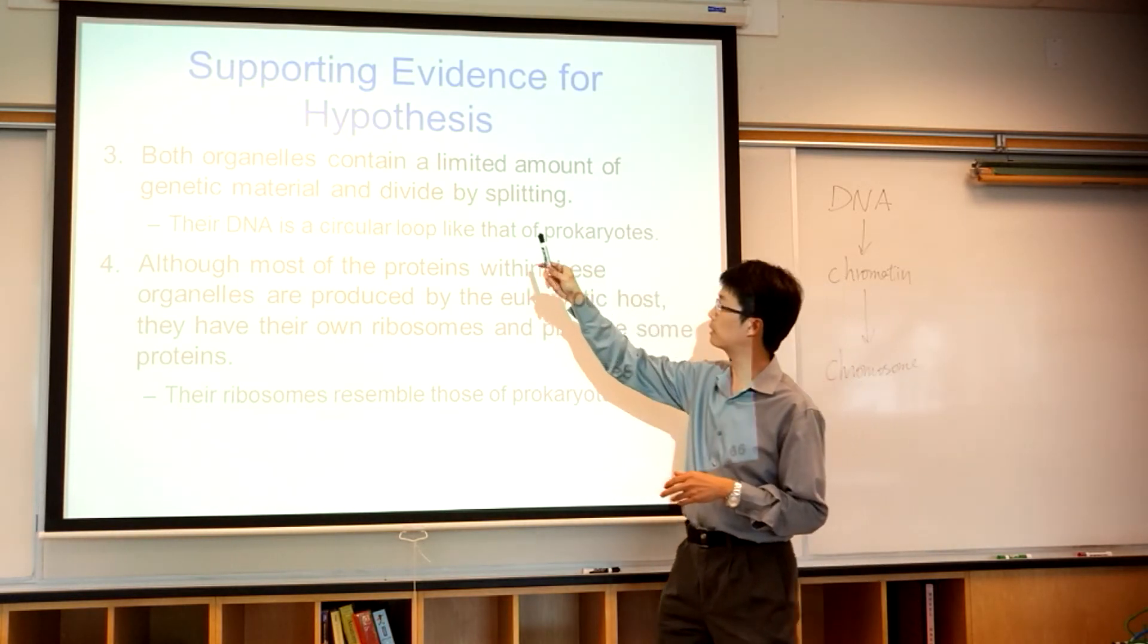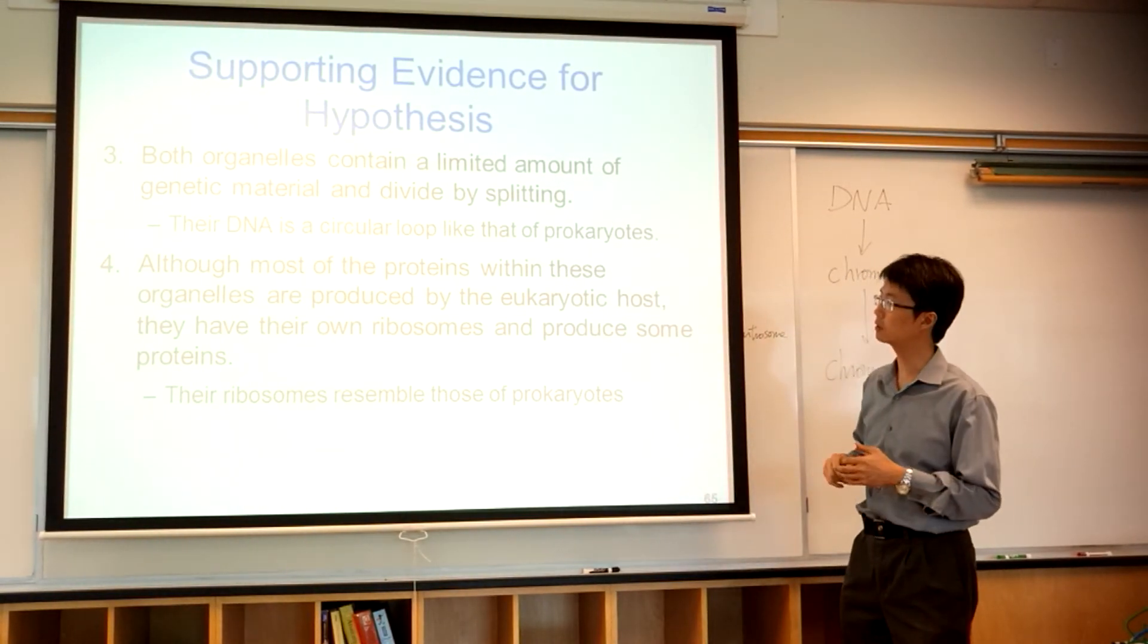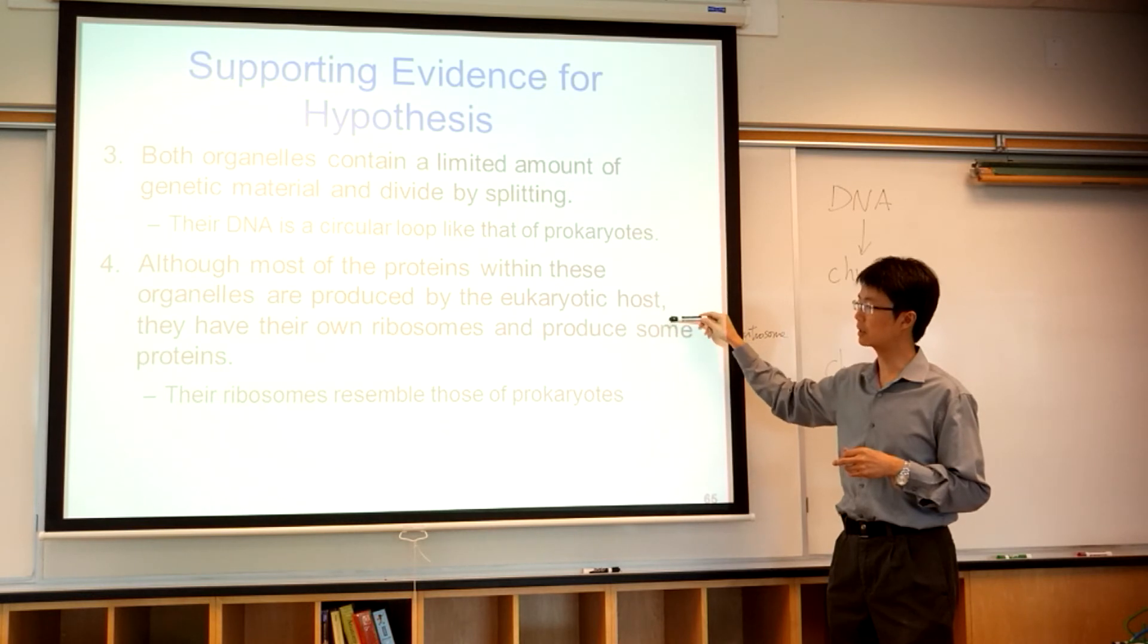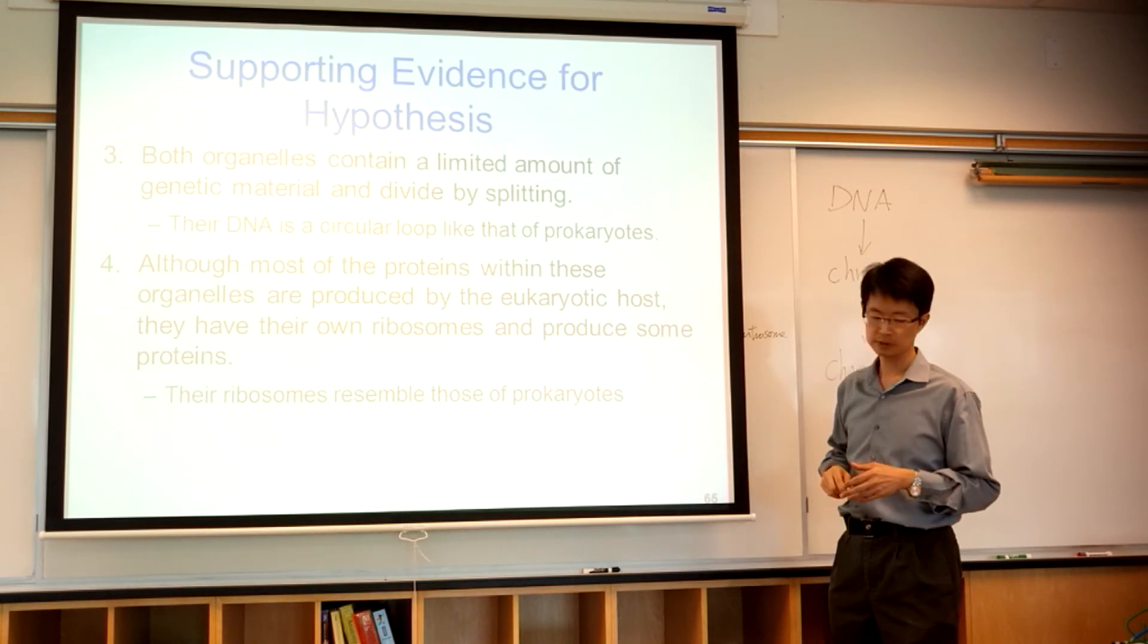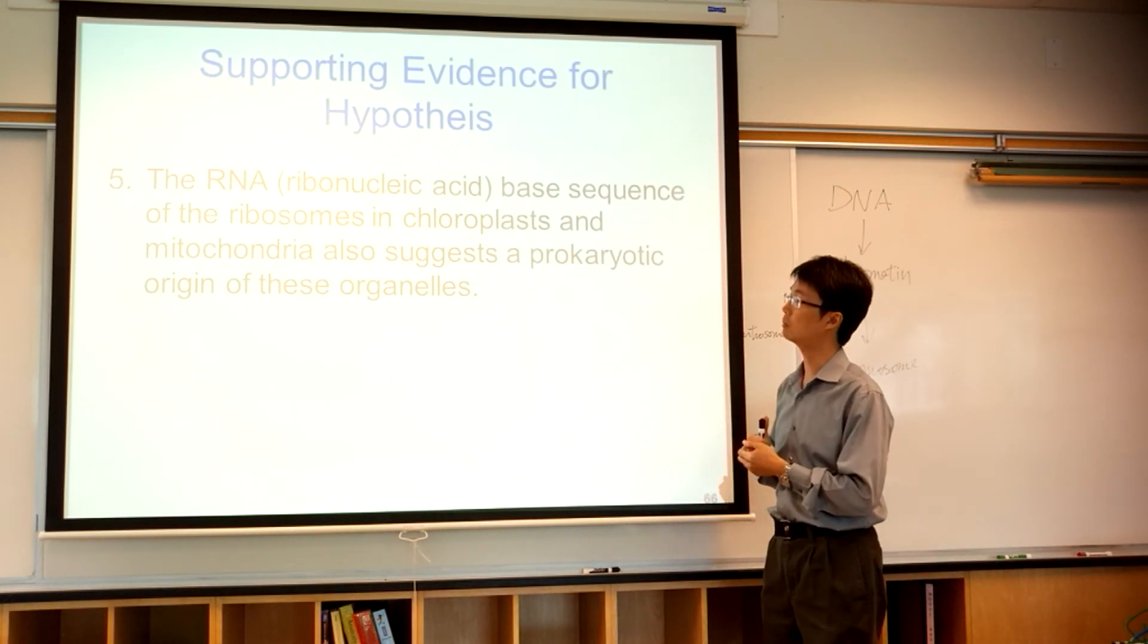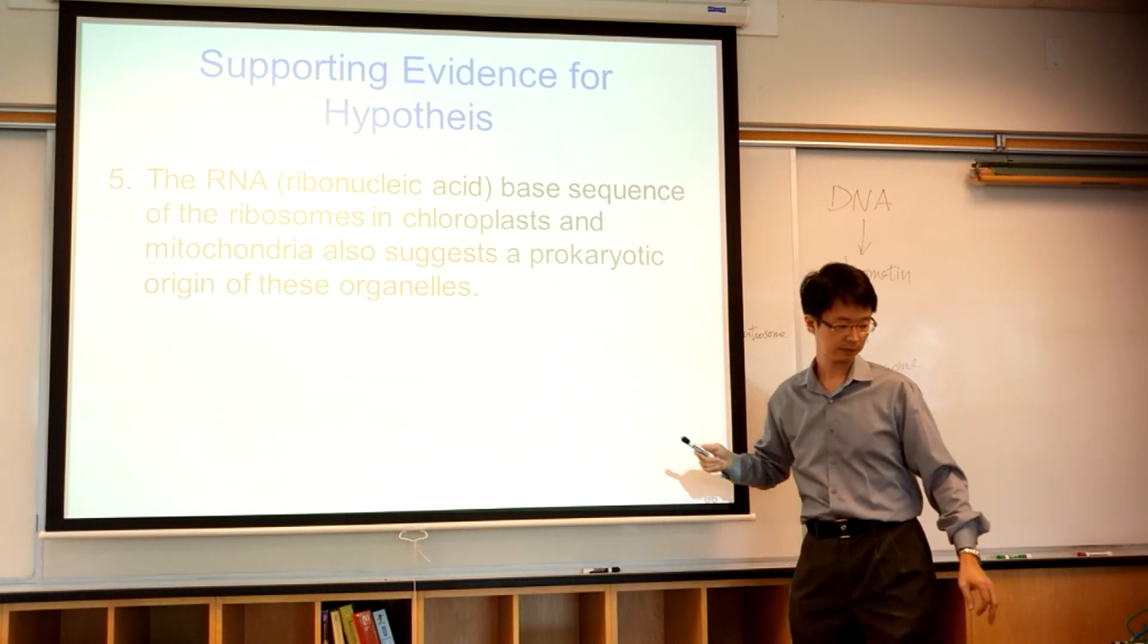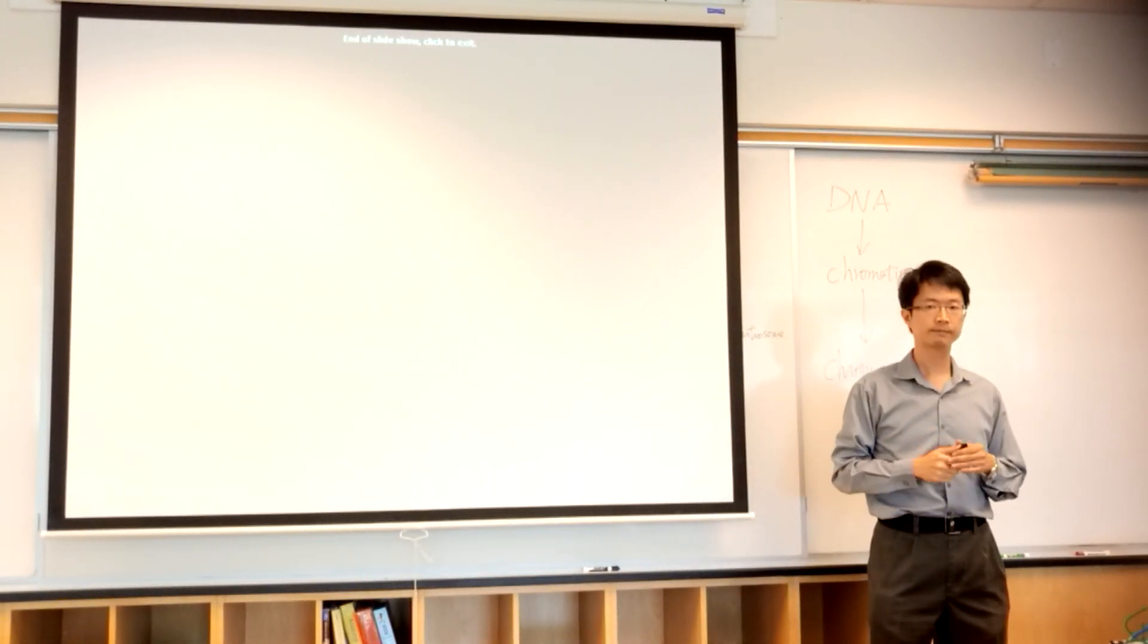They have their own genetic material, and they can divide—they can do mitosis by themselves. So, they can make their own protein, they have their own ribosomes. And the ribosome looks like the prokaryote ribosome. The RNA of the mitochondria and chloroplasts, they are of prokaryotic origin. So, that's it for this lecture.